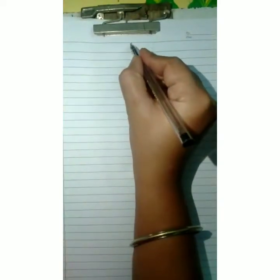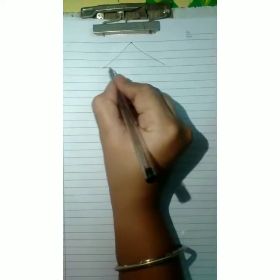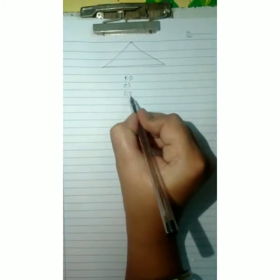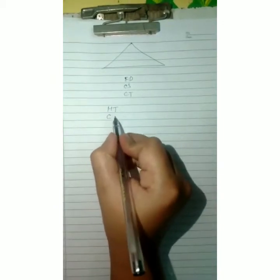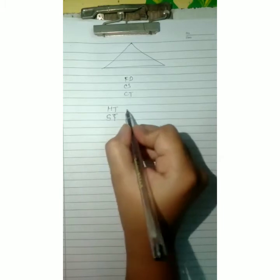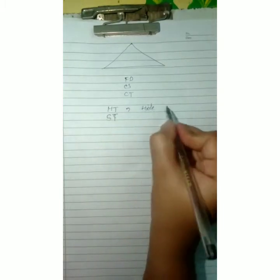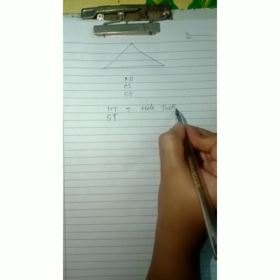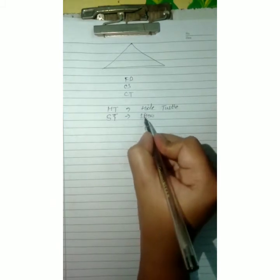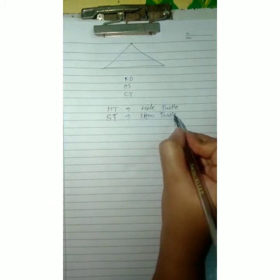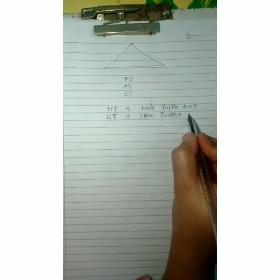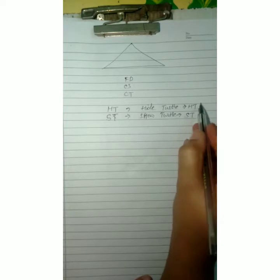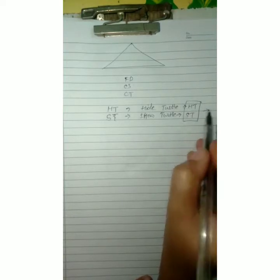Hello children, today we will learn how to make a triangle with the help of FD, CS, and CT. We will also learn two new commands: HD and ST. HD means hide turtle and ST means show turtle. Whenever you want to hide the turtle you can write HD, and whenever you want to show the turtle you can write ST. I will show this at the time of practical on turtle academy.